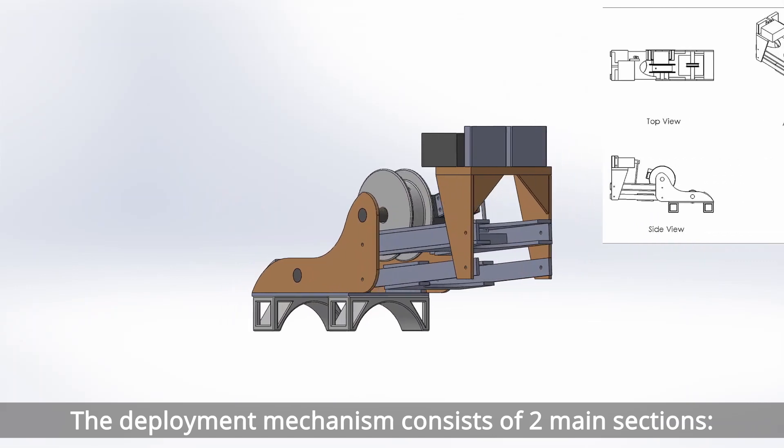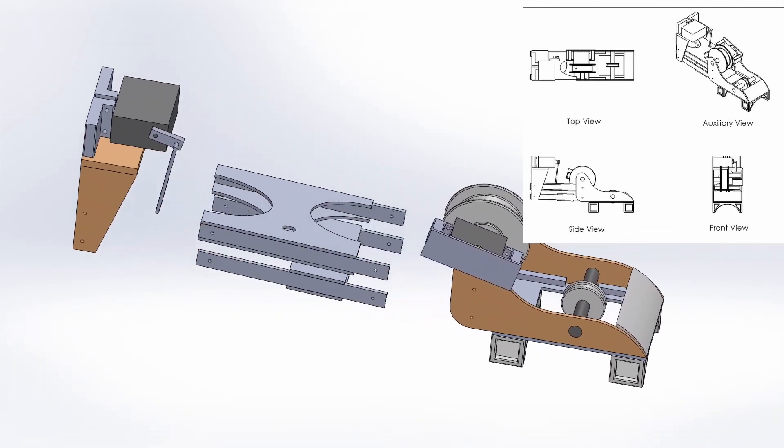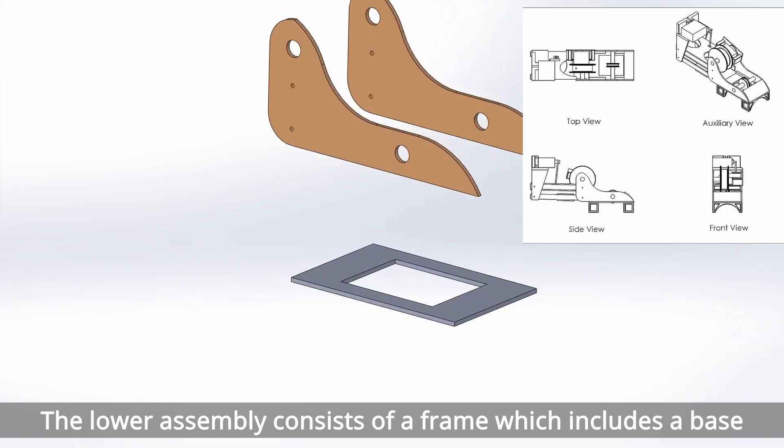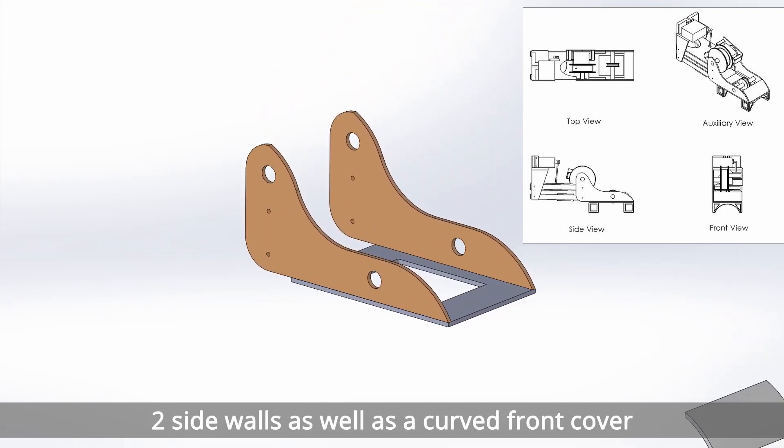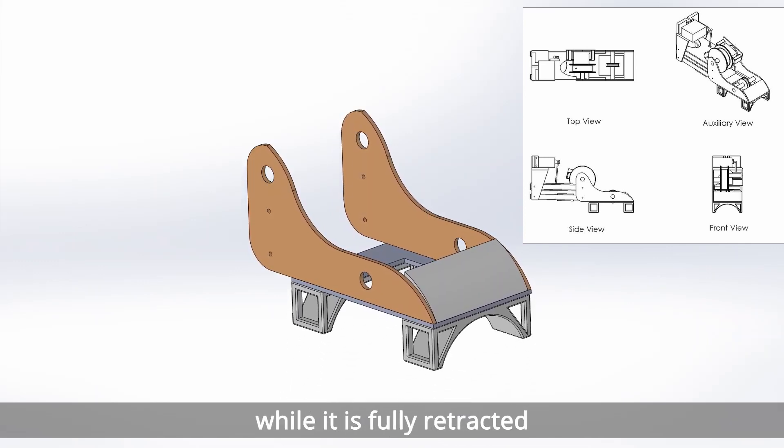The deployment mechanism consists of two main sections: the deployment arms as well as the lower assembly. The lower assembly consists of a frame which includes a base, two side walls, as well as a curved front cover. The sensor housing helps to reduce the shaking of the sensor while it is fully retracted.